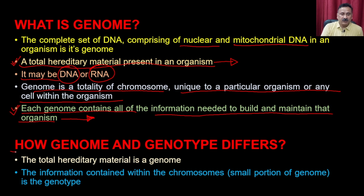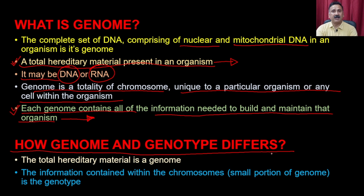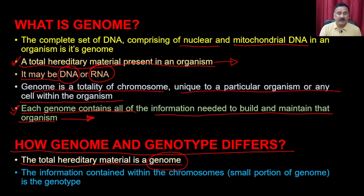Students often confuse genome and genotype. The genome is the total hereditary material present in an organism, whereas genotype refers to a part of the genome — the information contained within a portion of a chromosome. For example, you can have a genotype for tallness, dark skin, brown eyes, or gray hair. These are properties localized within a small portion of the genome. So the genome is a collection of genotypes, and the genotype is a subset of the genome.